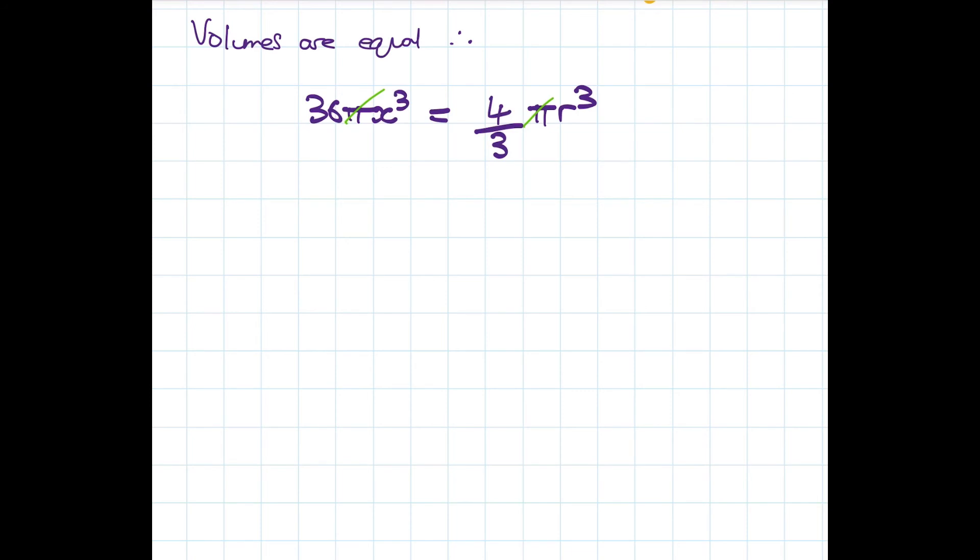So we'll times by 3 first to get 108x³ equals 4r³, then divide by 4 to get 27x³ equals r³, and then we'll take the cube root. So we're going to get the cube root of all of this, 27x³ equals r, and so r equals 3x. Cube root of 27 is 3, cube root of x³ is x.